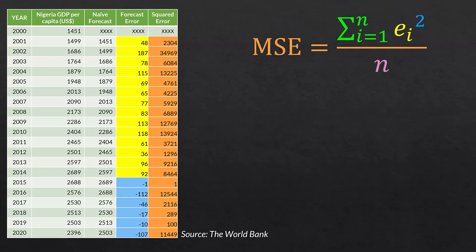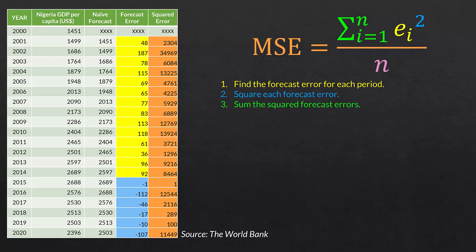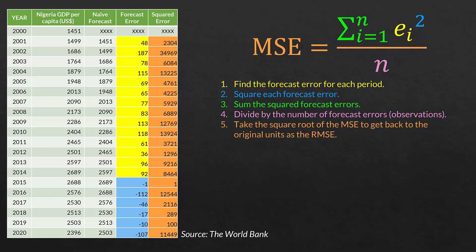To compute mean square error: find the forecast error for each period (e sub i), square each forecast error, sum the squared forecast errors (the green summation sign), and divide by the number of observations in the denominator. Then take the square root of the mean square error to get back to the original units as the root mean square error. The squared error column in this table is in squared US dollars, which doesn't make practical sense, so we take the square root to return to regular US dollars.